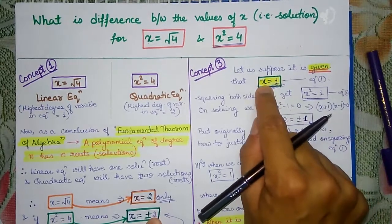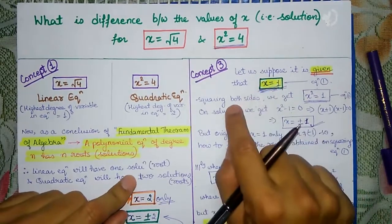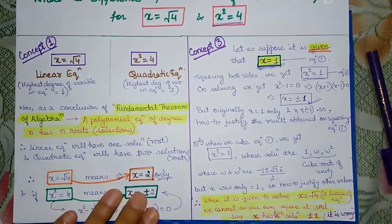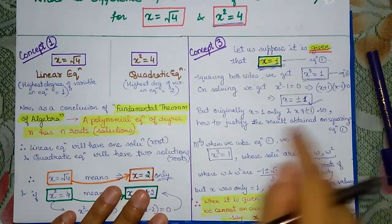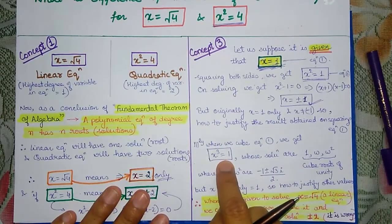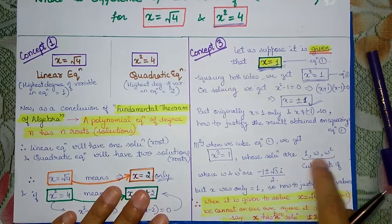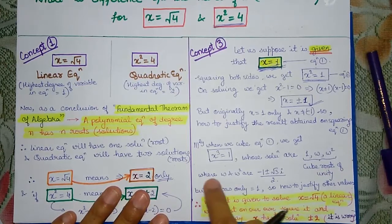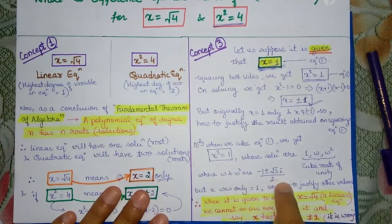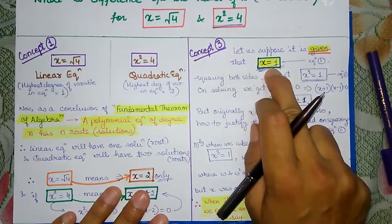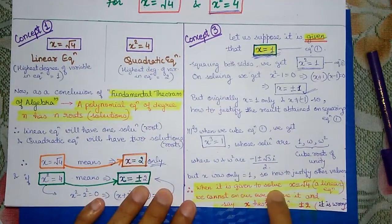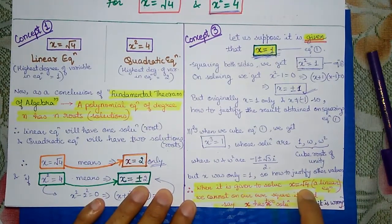By what right do we square a linear equation? Similarly, if x equals 1 is cubed, then using cube roots of unity — 1, omega, omega squared — we would find three solutions including complex values like minus 1 plus minus root 3i by 2. But originally we had only one value. We cannot justify these extra answers. So when we are given x is equal to root 4, it is a linear equation. We cannot square it on our own and claim two solutions plus or minus 2.